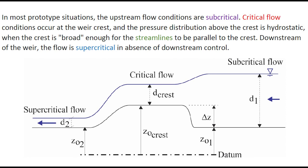In most prototype situations, the upstream flow conditions are subcritical. Critical flow conditions occur at the weir crest and the pressure distribution above the crest is hydrostatic, when the crest is broad enough for the streamlines to be parallel to the crest.